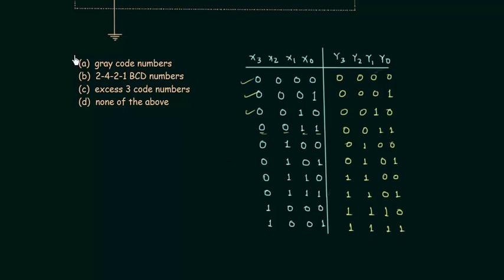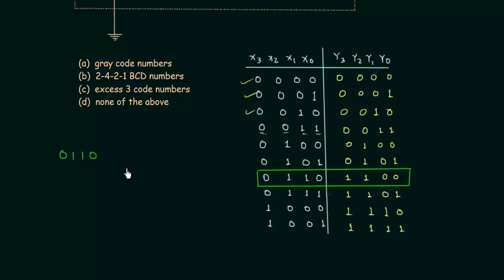This is the complete table and we have to choose the correct option from the four given options. I will choose one case to identify the correct option. When the BCD number is 0110, let's find the equivalent Gray code. The Gray code is computed by writing the first bit as-is: 0. The second bit is 0 XOR 1 = 1. Then 1 XOR 1 = 0. The final bit is 1 XOR 0 = 1. So the equivalent Gray code is 0101 for BCD 0110.